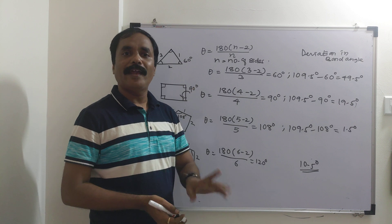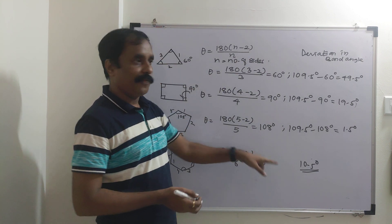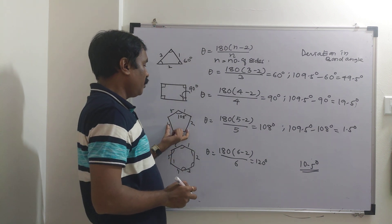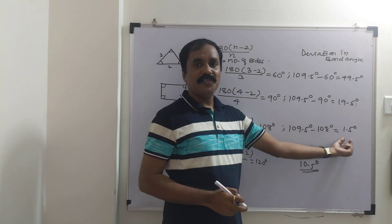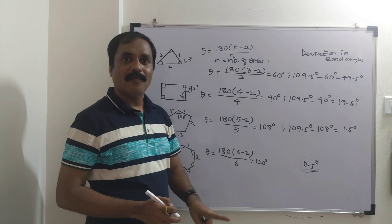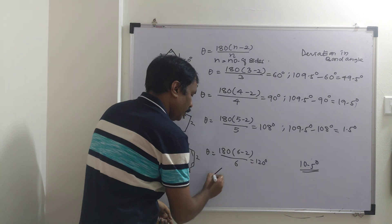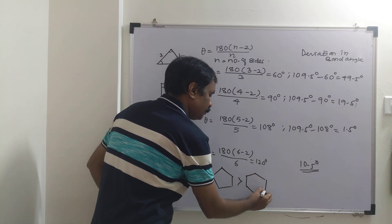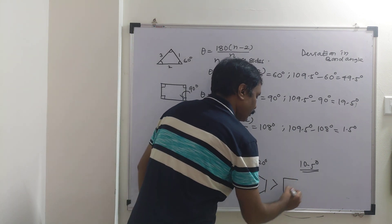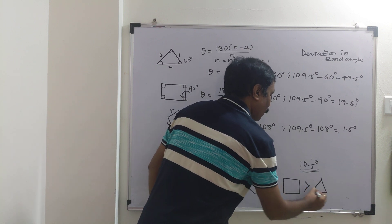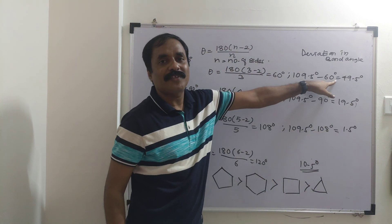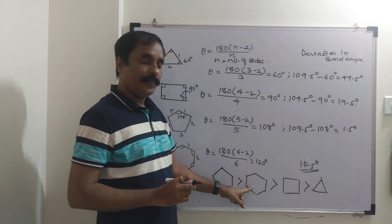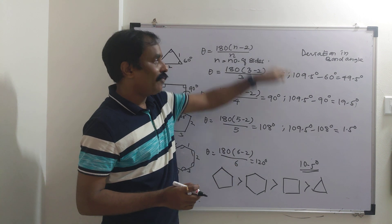On the basis of deviation in bond angles, the stability order based on angle strain is: cyclopentane is most stable (only 1.5° deviation), then cyclohexane, then cyclobutane, and cyclopropane is most unstable due to much higher angle strain. However, this order is not actually correct.